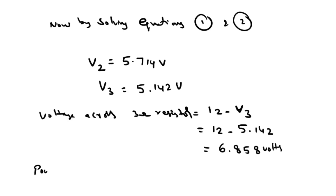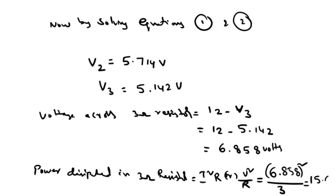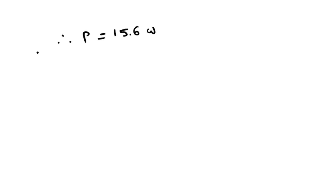Power dissipated in the 3 ohm resistor is equal to V² by R. The voltage is 6.858 volts, so power equals 6.858 squared divided by 3 ohms, which equals 15.6 watts. Therefore, power P equals 15.6 watts.